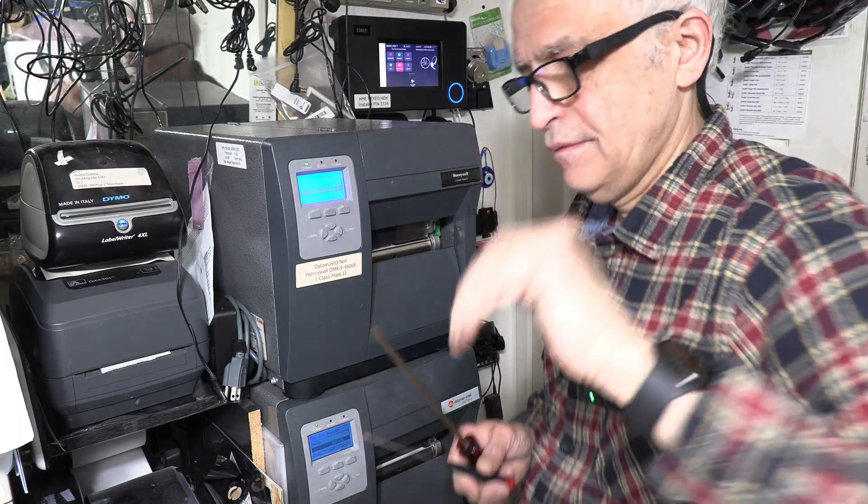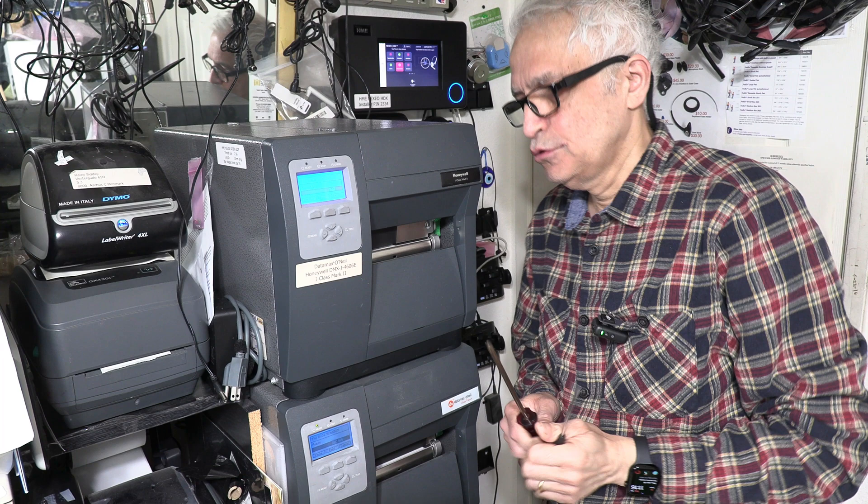Hello everybody, my name is Khaled Siddiqi, and in this video you are going to learn how to replace the printhead in your Datamax O'Neill DMX4606E printer. That's a professional industrial level label printer. Let's get started.